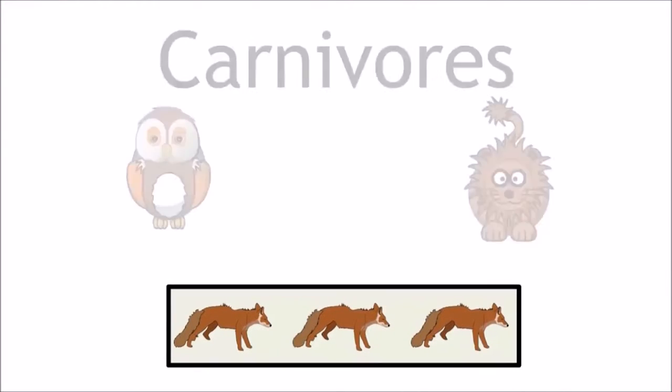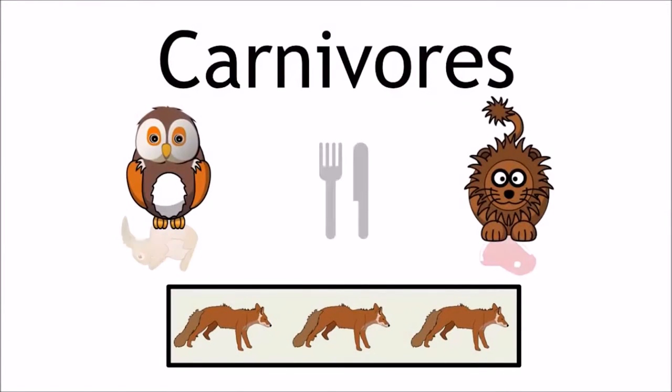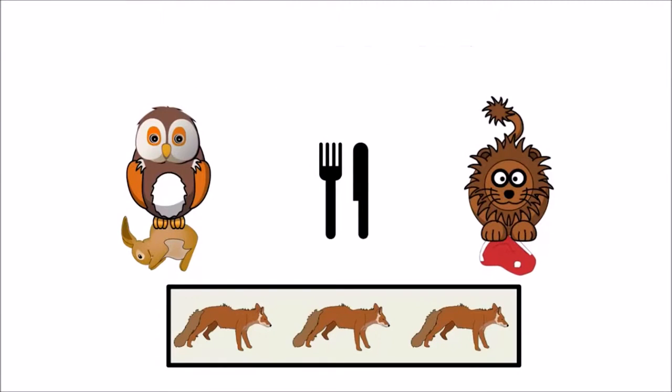Level 3 is carnivores who eat herbivores. They are eating organisms from level 2 so they are the secondary consumers.